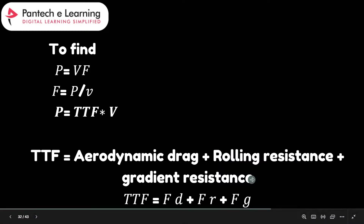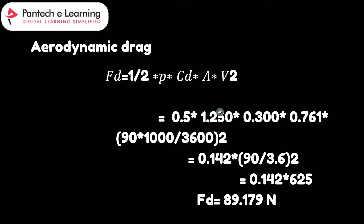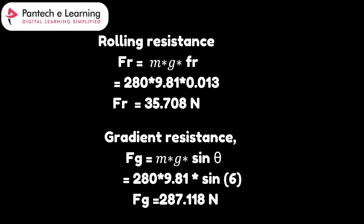The total tractive force is the sum of aerodynamic drag, rolling resistance, and gradient resistance — I am not including the acceleration force here, this is for understanding purposes only. The aerodynamic drag force formula is: half × rho × CD × A × V squared, where rho is air density. The aerodynamic drag force comes out to 89.179 N. Next we calculate the rolling resistance force and the gradient resistance force using the formulas and values from the previous slide.